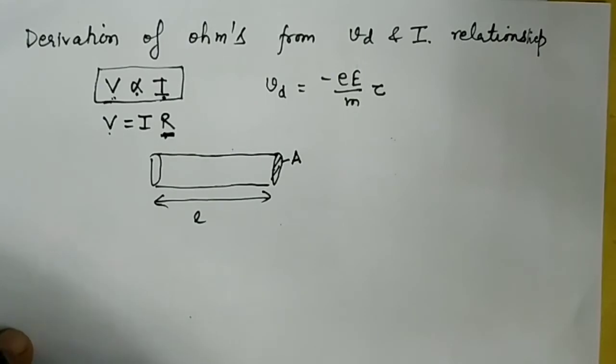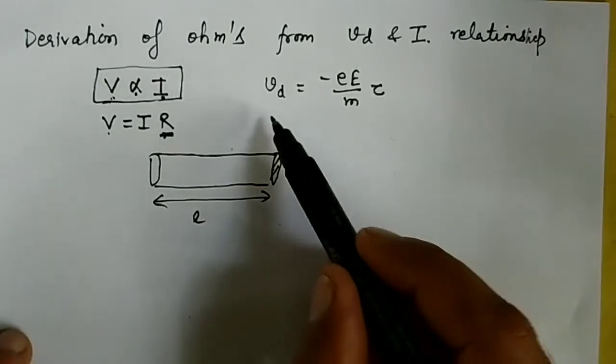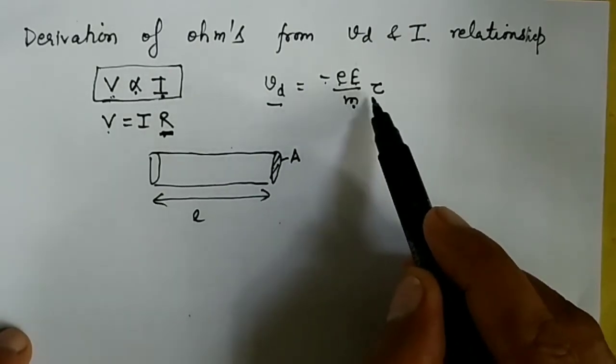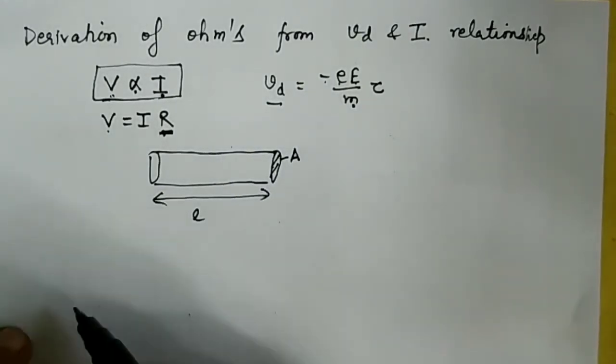The drift velocity is vd equals minus e times capital E divided by m times tau.